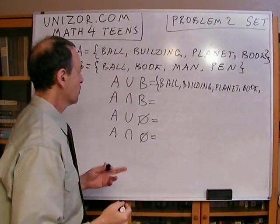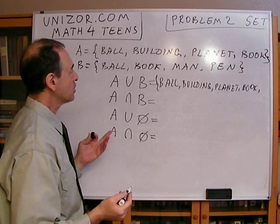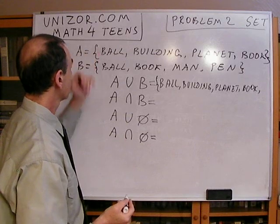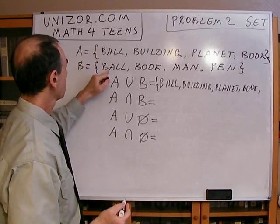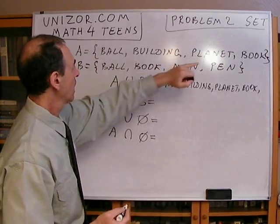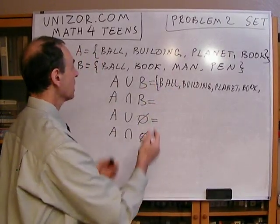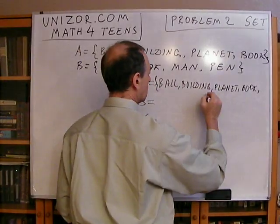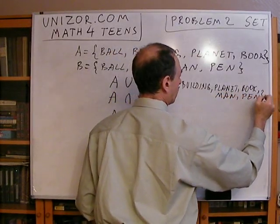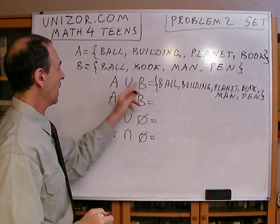Next, we should consider the set B and identify which elements are new and which elements are not already contained in A. The wall has already been listed as part of the A set. The book as well, but man and pen were not listed before. So, if I'm unionizing A and B, I have to add man and pen, and that's the result of the union between A and B.